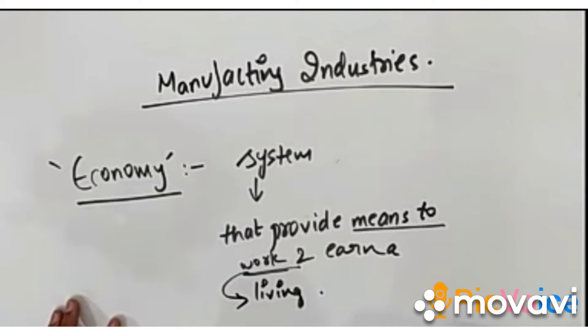Hello children, today we will revise geography chapter: Manufacturing Industries. Before starting this chapter, there is a word 'economy.' Economy is a system that provides means to work and earn a living — it provides work, yani job dilata hai. This work we can do in any factory, any organization, in a mine, and for that work we earn money, jis pe hamari zindagi survive hoti hai.